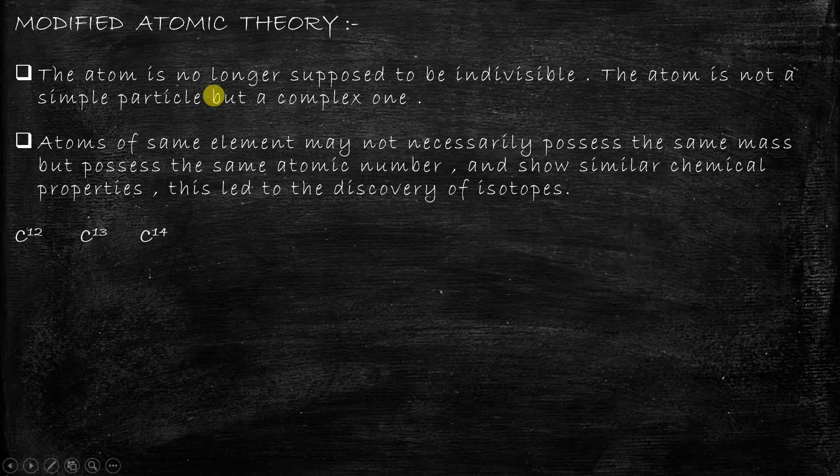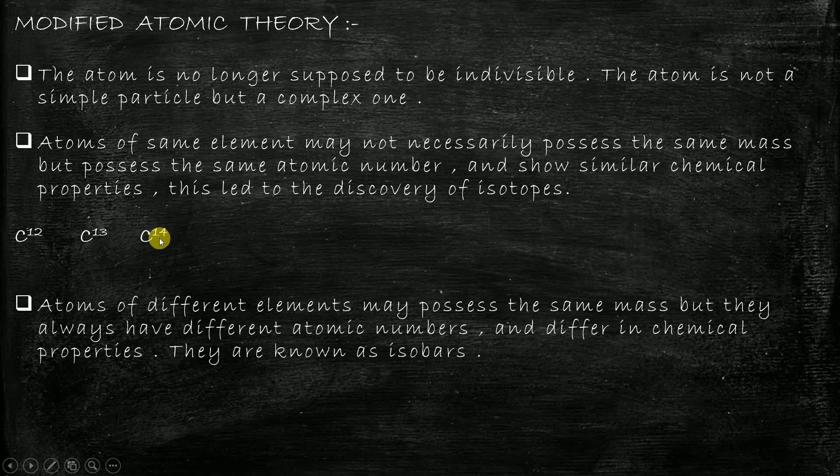So it is possible to have an atom of the same element, carbon, with a different atomic mass number. The third point states that atoms of different elements may possess the same mass but they always have different atomic numbers and differ in chemical properties. They are known as isobars.